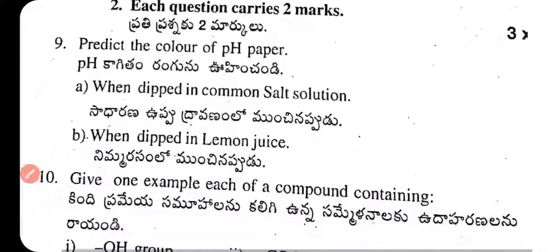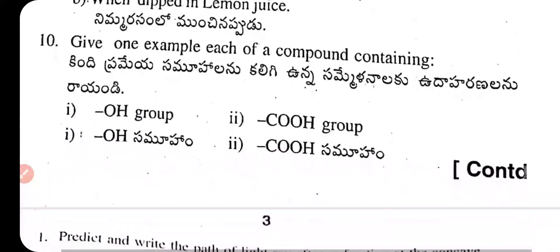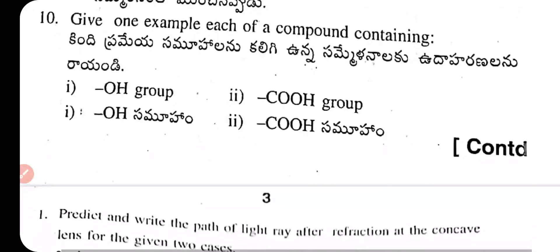Question 9: Predict the color of pH paper when dipped in common salt solution and when dipped in lemon juice. Question 10: Give one example each of a compound containing an OH group and an acidic group.